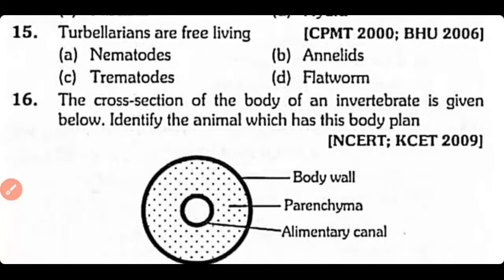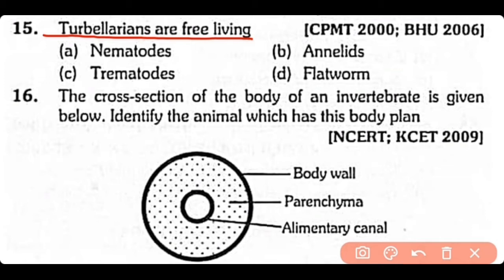Question no.15. Turbellarians are free-living: nematodes, annelids, trematodes, or flatworms? The correct answer is option D. Turbellarians are free-living flatworms.